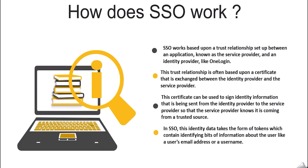How does SSO work? SSO works based upon a trusted relationship set between an application known as a service provider and an identity provider like OneLogin. This trust relationship is often based upon a certificate that is exchanged between the identity provider and the service provider. This certificate can be used to sign identity information being sent from the identity provider to the service provider, so that the service provider knows it is coming from a trusted source.